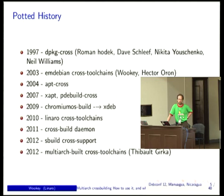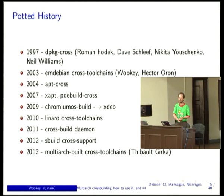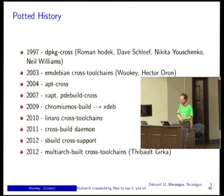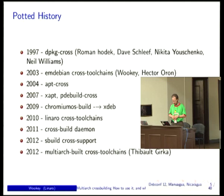apt-cross had various issues and mostly broke, so there have been other attempts: xapt is a simpler approach, and pbuilder-cross wraps that in a chroot. Meanwhile, Colin Watson wrote a cross-build tool for Chromium OS over in Ubuntu, later renamed to xdeb — quite useful for installing dependencies and cross-building. What dpkg-cross does is take libraries from the host architecture and mangle files to different paths so the cross tools can find them.